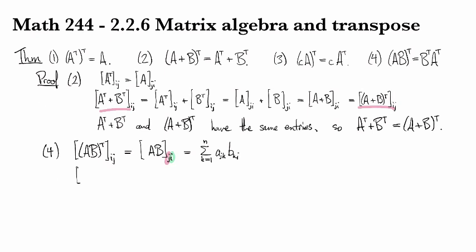Meanwhile if we look at B transpose times A transpose and we take the ijth entry of that, then that's going to be, let's see, well we're going to need to look at the ikth entry of B transpose summed against the kjth entry of A transpose.